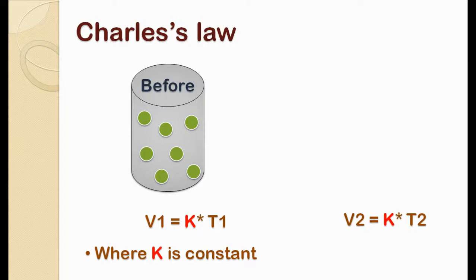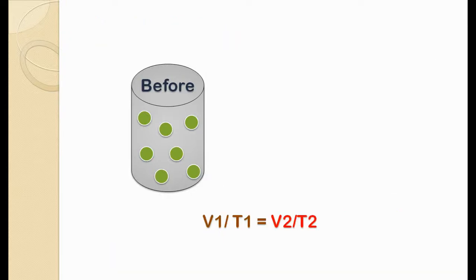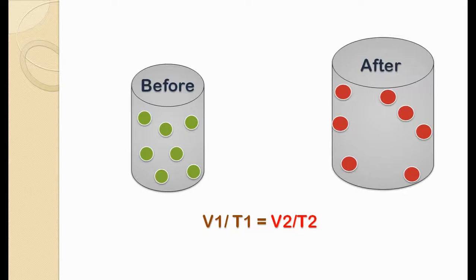To simplify this equation we will introduce one constant which is K. So V1 is equal to K into T1 and second equation is V2 is equal to K into T2. Now we will combine both of these equations since K is constant for both. So final expression becomes V1 divided by T1 is equal to V2 divided by T2.